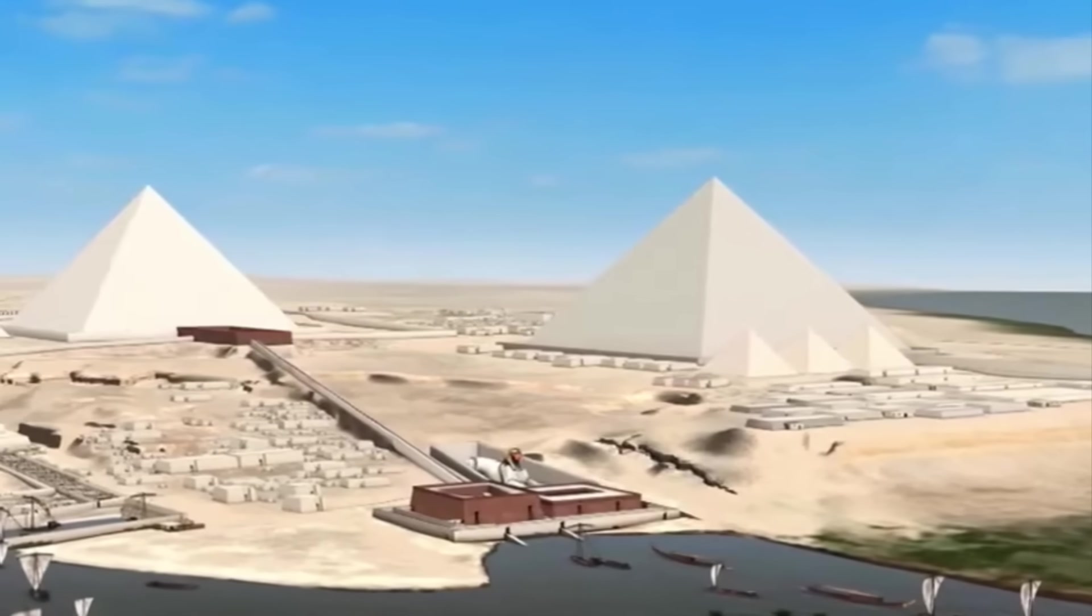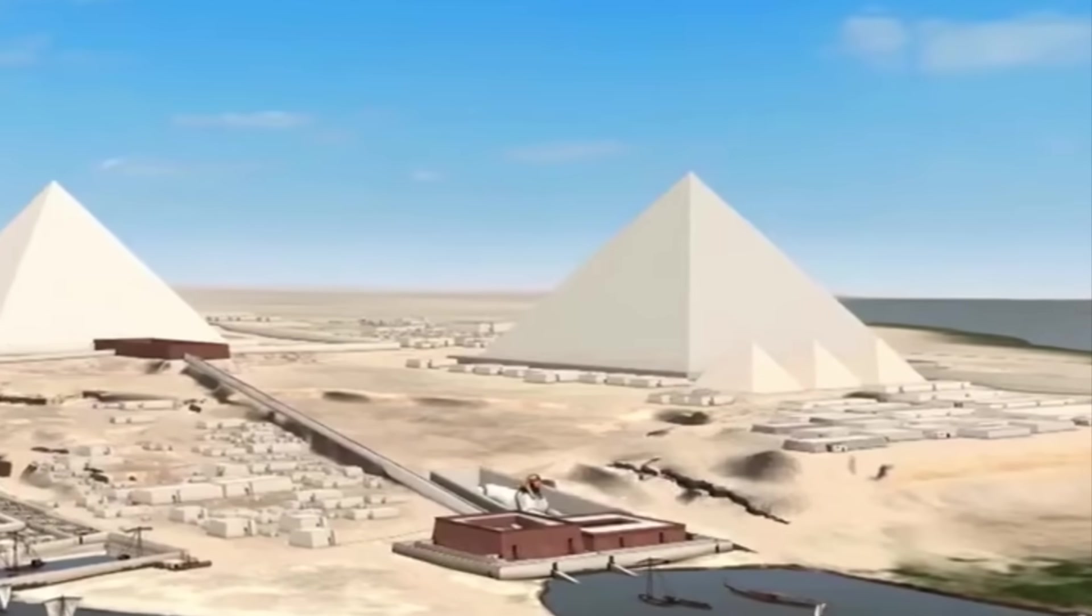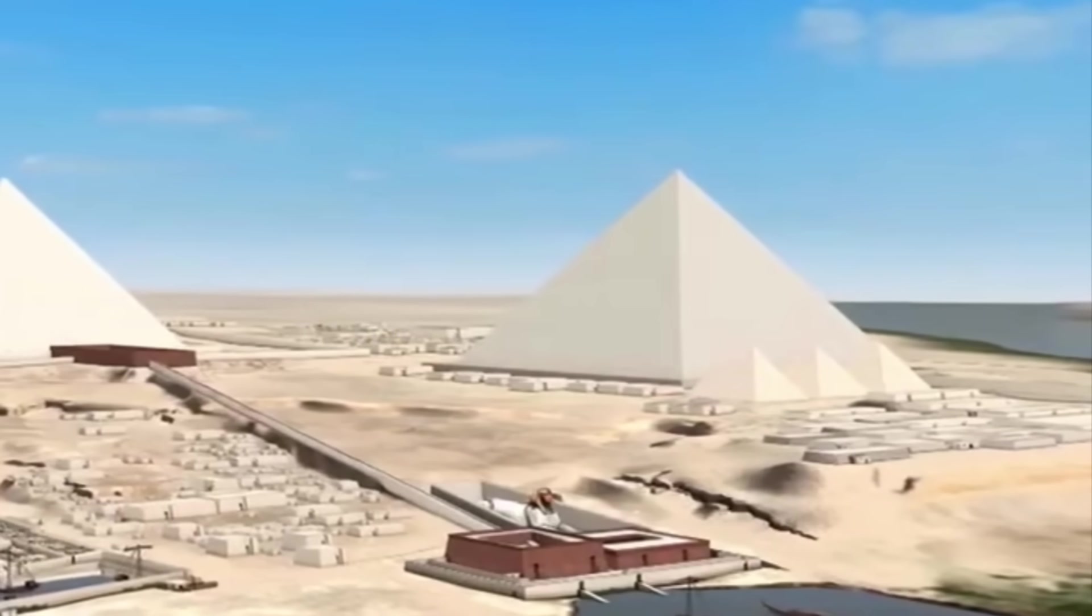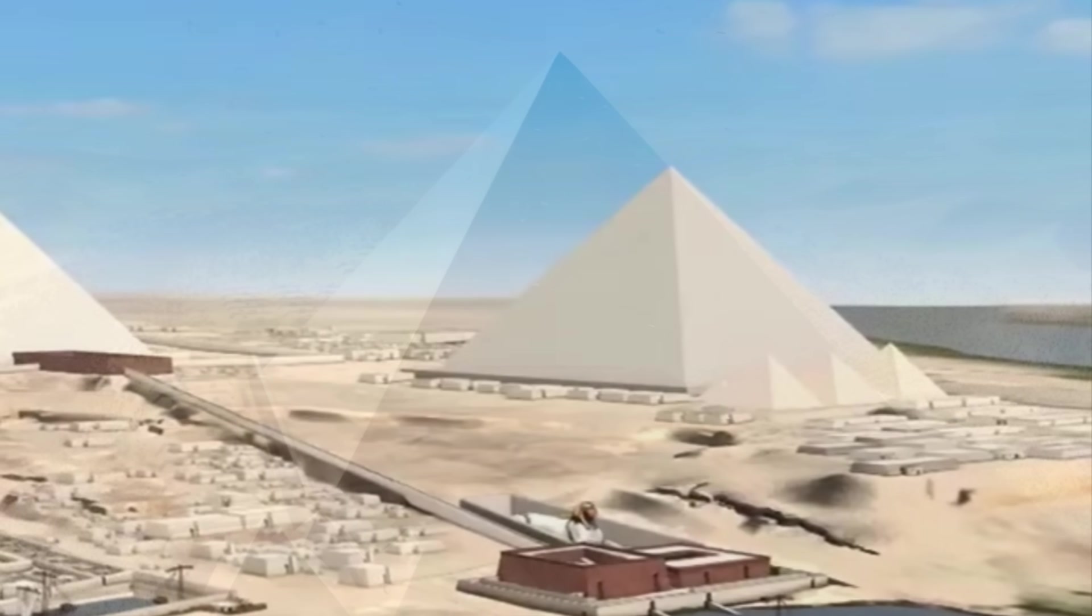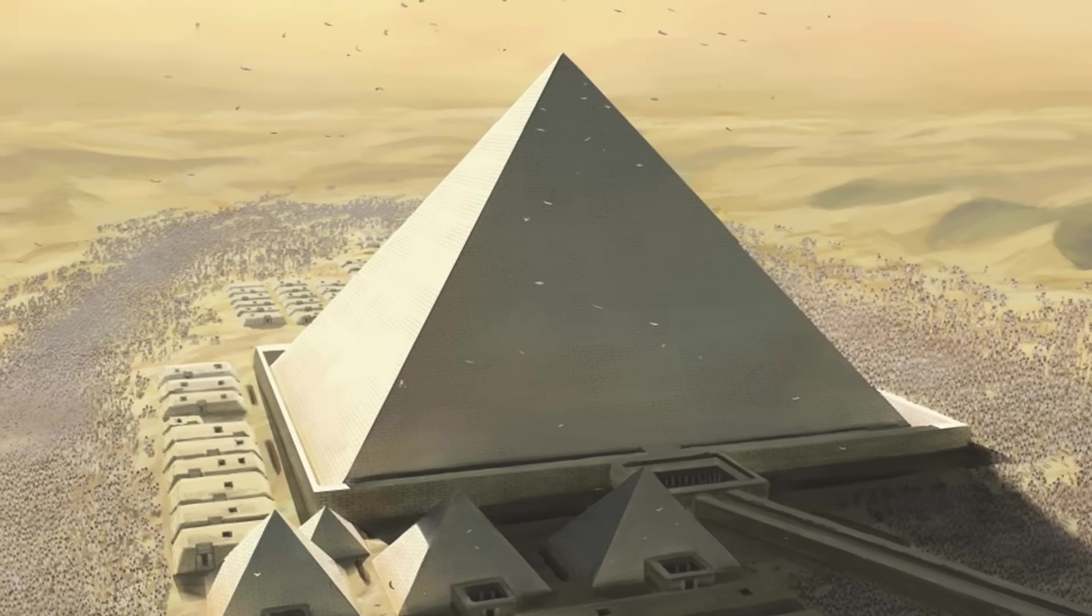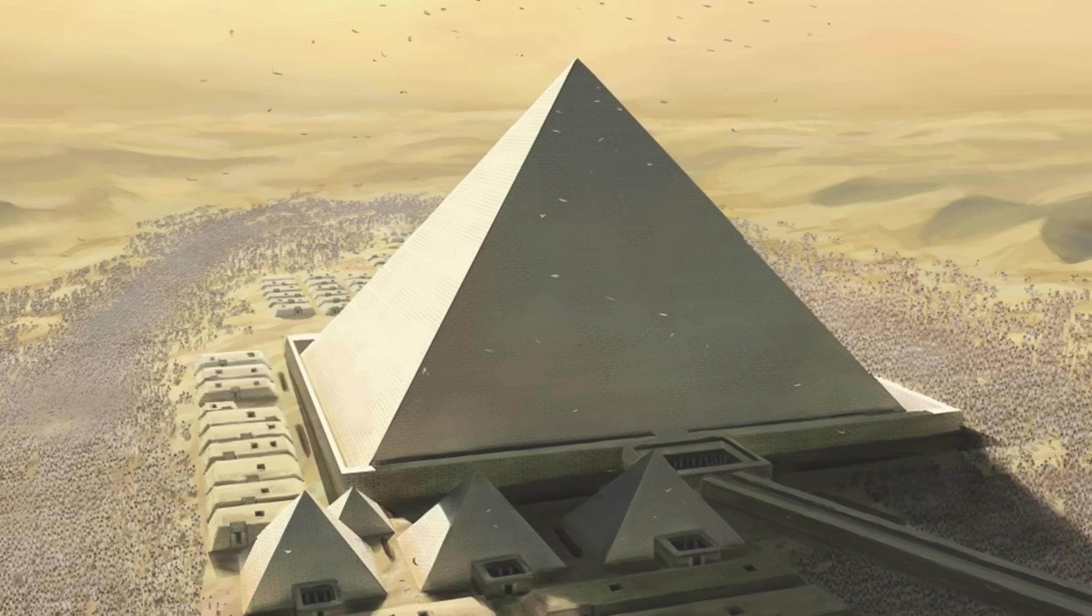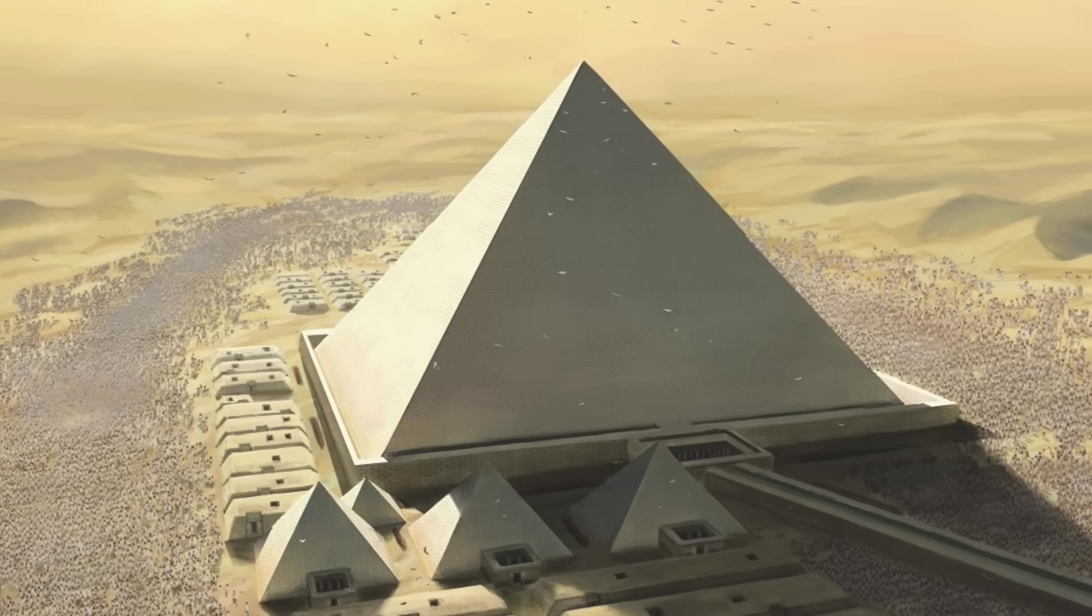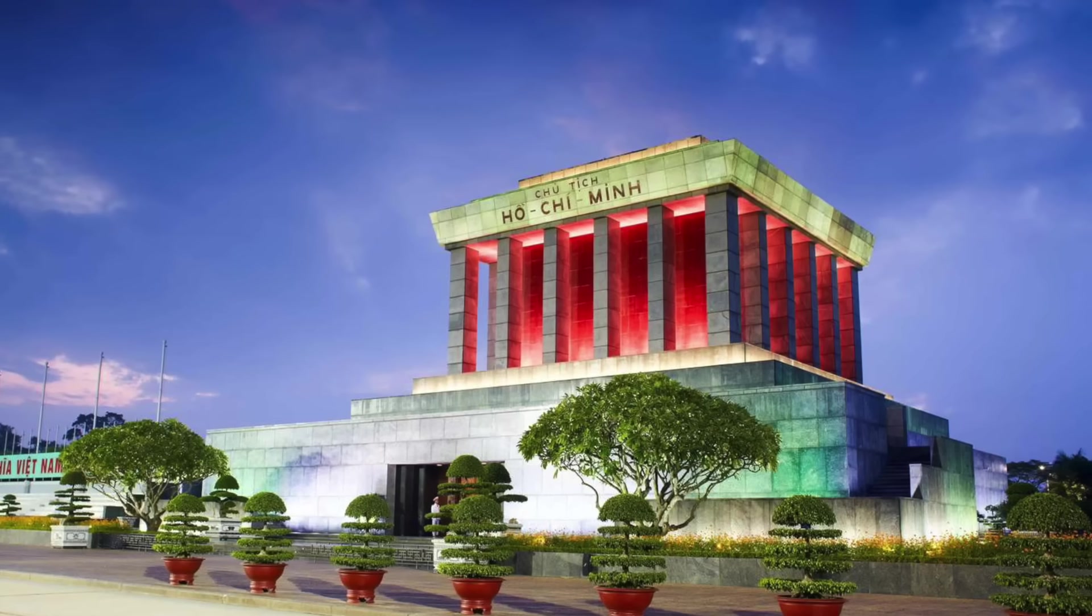But I think that for some amount of time, it does make sense the Great Pyramid acted like a mausoleum, and that's why air channels were made for the King's Chamber. I believe people from all over Egypt, and maybe even abroad, would enter the pyramid to see the deceased King, just as people do today with the preserved body of Ho Chi Minh in his mausoleum in Vietnam.